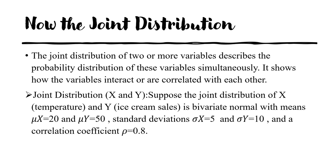Bringing back our previous example: the joint distribution of x (daily temperature) and y (daily ice cream sales). Suppose the joint distribution is a bivariate normal with μ_x = 20, μ_y = 50, σ_x = 5, σ_y = 10, and correlation coefficient ρ = 0.8. This is a bivariate normal with a strong positive association — when temperature rises, ice cream sales increase.